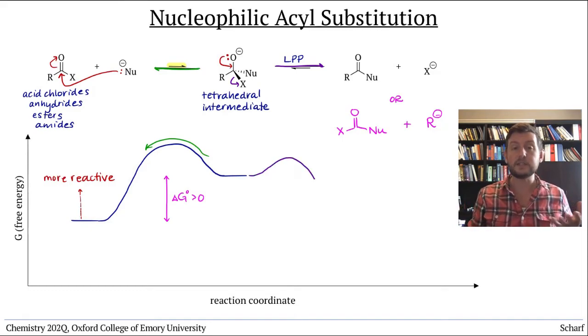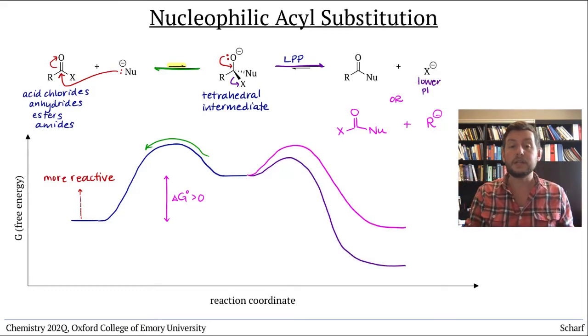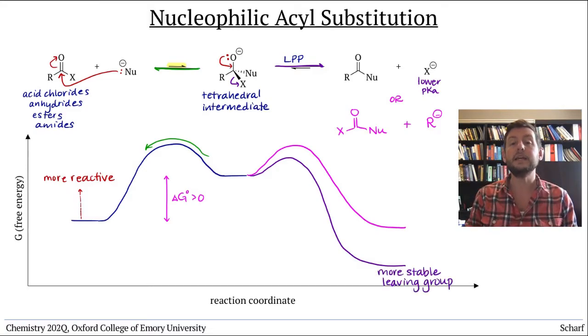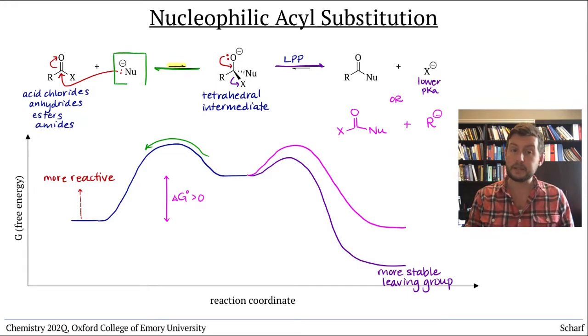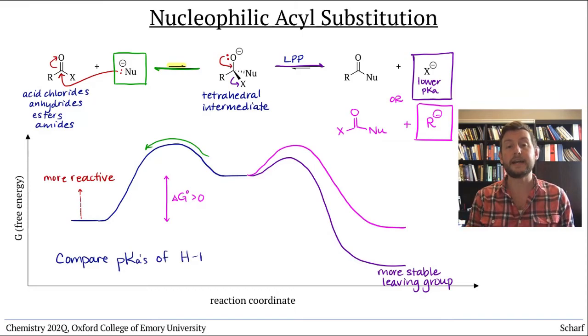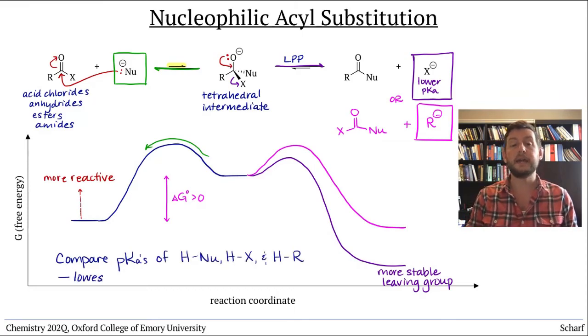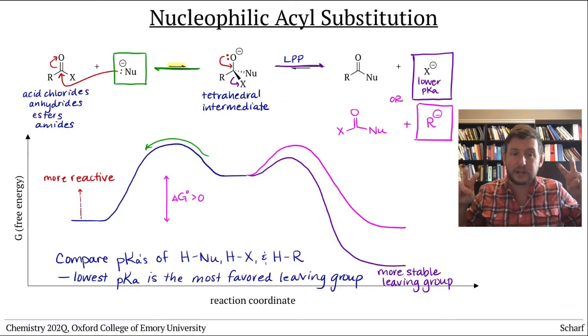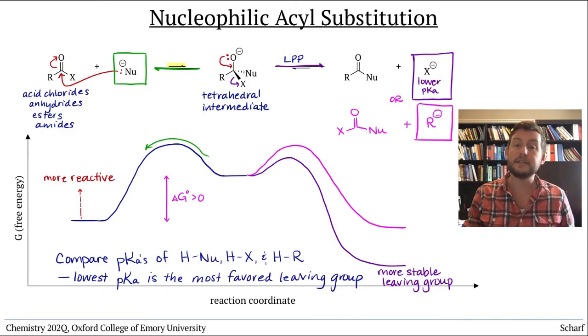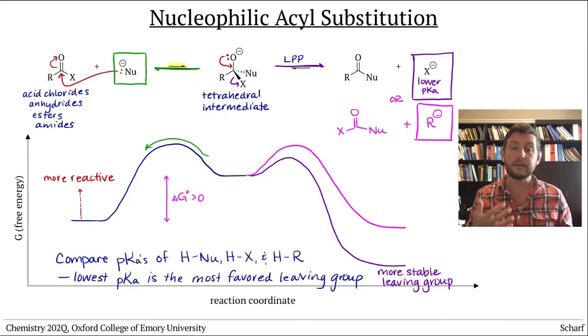We can tell which of these three possible fates of the tetrahedral intermediate is most likely by examining the stability of the three possible leaving groups. The stability of the leaving groups is measured by their conjugate acid's pKa's. The lower the pKa of the leaving group's conjugate acid, the better the leaving group is. We can use pKa's as a proxy measure to determine whether a nucleophilic acyl substitution reaction is favorable or not, by comparing the pKa's of the conjugate acids of the original nucleophile and the leaving group. If the leaving group's conjugate acid has a lower pKa than the conjugate acid of the nucleophile, then the overall reaction is probably spontaneous.